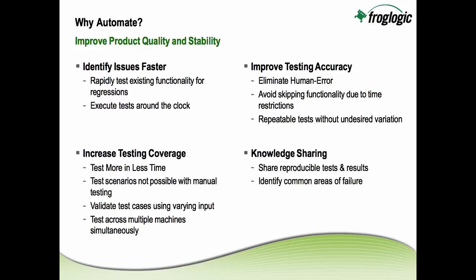As far as improving testing accuracy, you're helping to eliminate human error. While human error can be good in some circumstances, it can also be good to eliminate it when you're trying to make sure that your application hasn't regressed or moved backward from its prior release. Another thing commonly overlooked about automated testing is the knowledge sharing that comes with automated GUI testing — the ability to share not only the results, but share how issues were reproduced. Being able to share the execution of different scenarios, as well as over time help to identify common areas of failure and how you might improve either the code in that area or improve your testing.